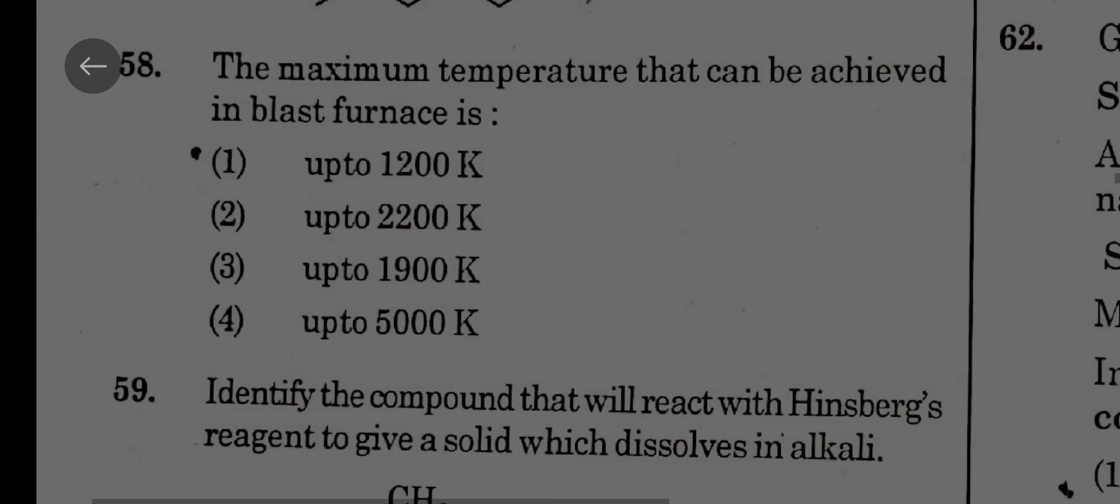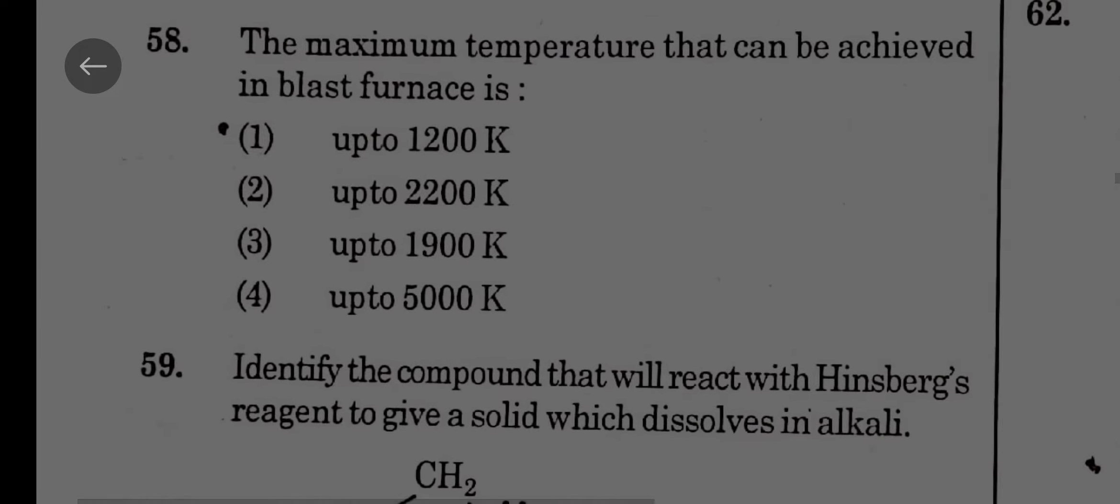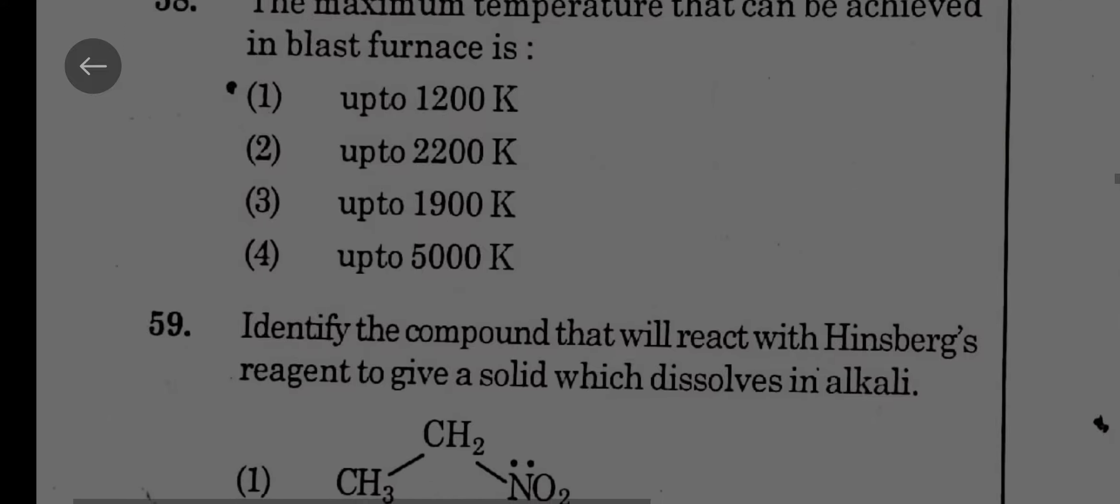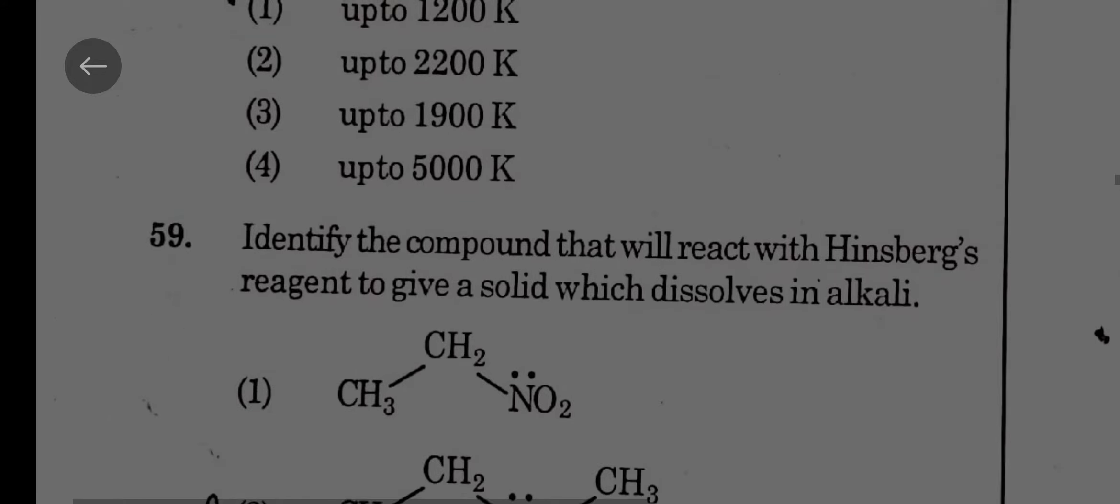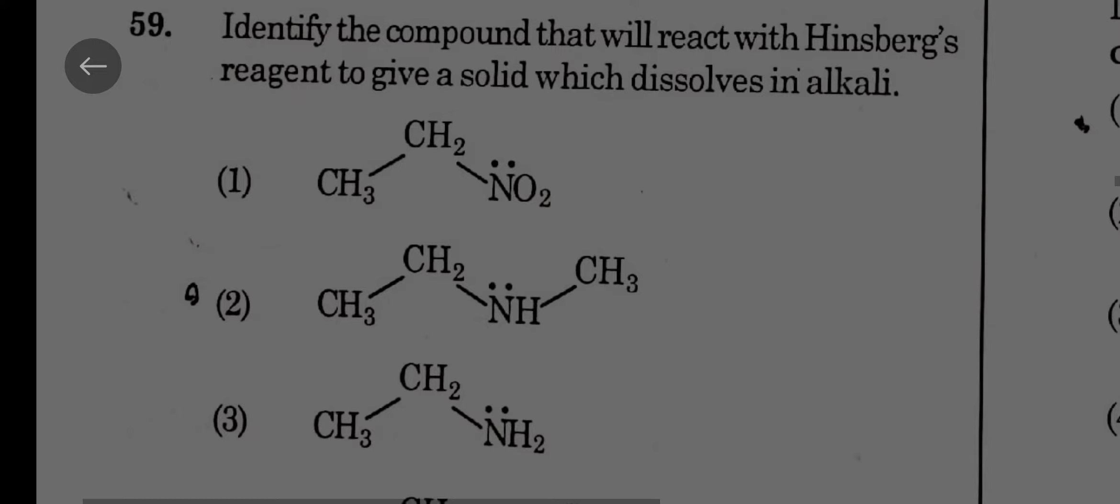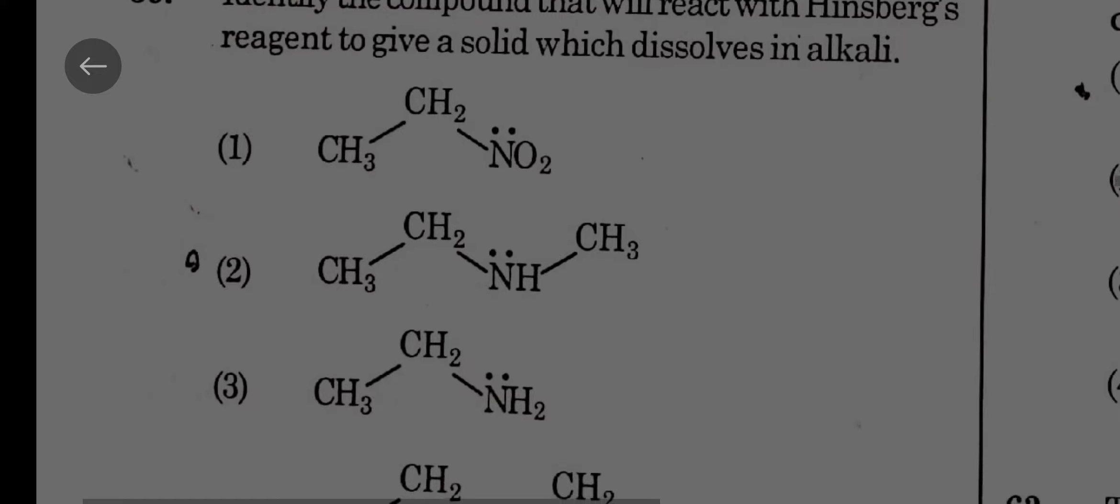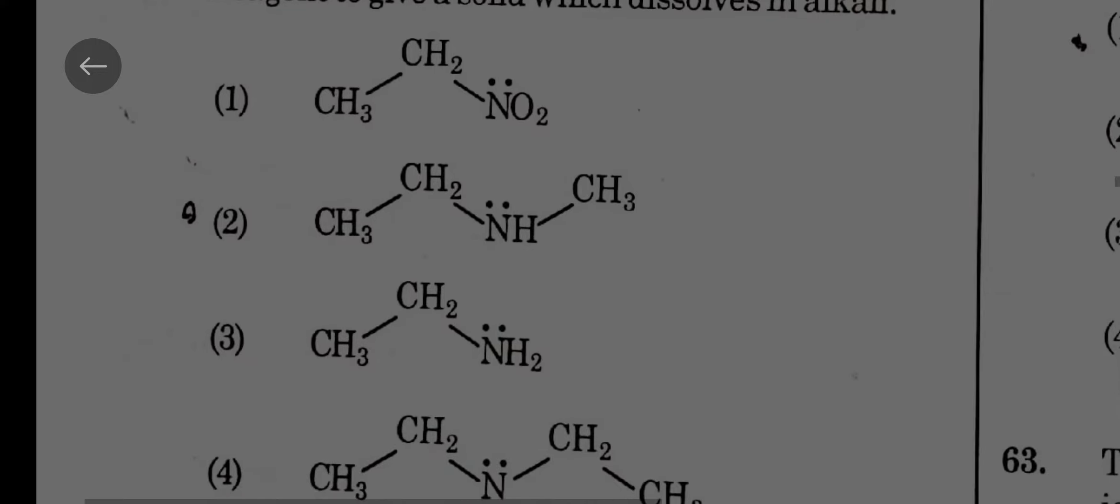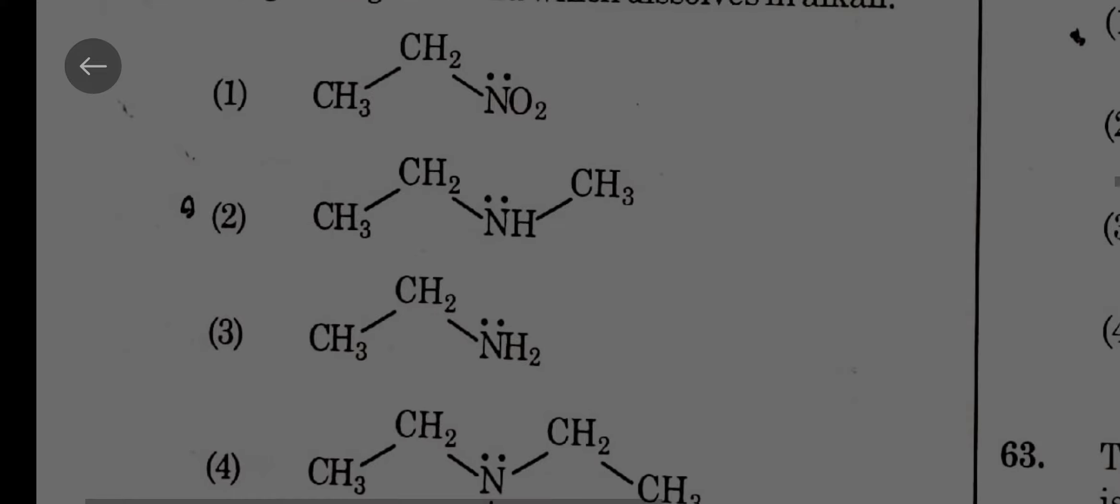The maximum temperature that can be achieved in blast furnaces is up to 2200 Kelvin. This is again an NCERT statement type question. Identify the compound that will react with Hinsberg reagent to give a solid which dissolves in alkali. It's primary amine, primary amine means NH2 group, so option three.